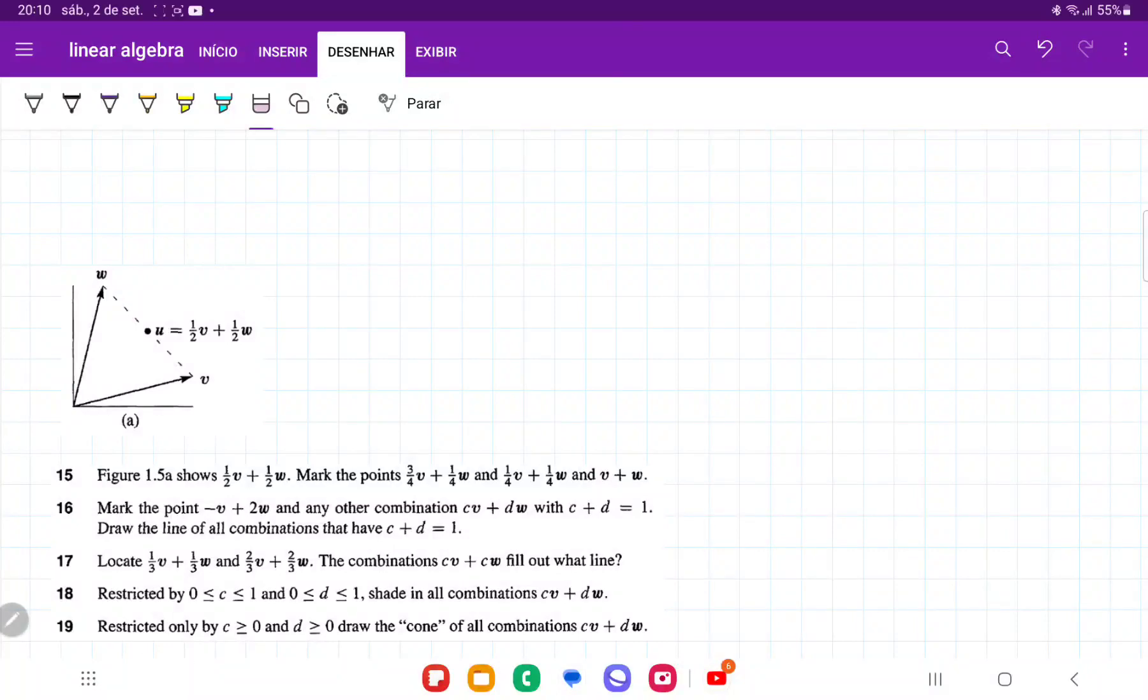So for number 19, they want us to draw the cone of all combinations CV plus DW.